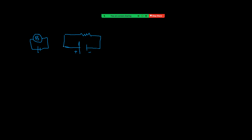Imagine a resistor or bulb connected across the battery — current flows and the bulb glows. Before connecting the battery, the drift velocity of electrons is zero. Even though electrons move randomly, there is no net current. That is why we do not focus on random motion. Once the battery is connected, it provides a potential difference.